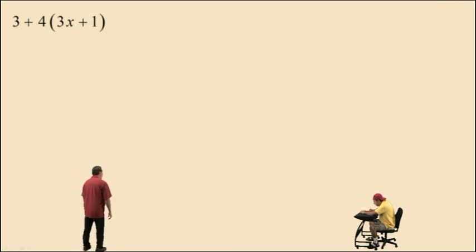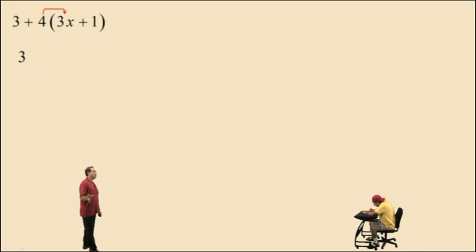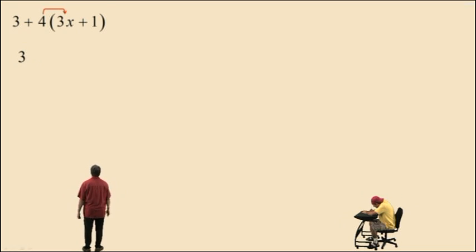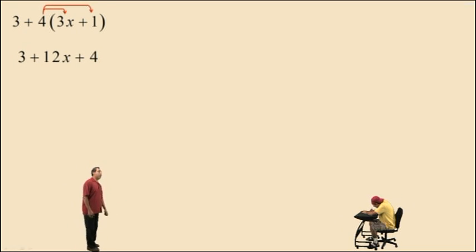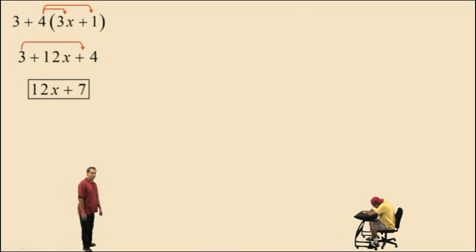Let's try this problem: 3 plus 4 times the quantity 3x plus 1. We have a multiplication — 4 times the parentheses — so we perform it using the distributive property. Remember, you can't simplify what's in the parentheses because they're not like terms. So 4 times 3x is 12x, and 4 times 1 is 4. Now we put our variable term first and add 3 plus 4, which is 7. Our answer is 12x plus 7.